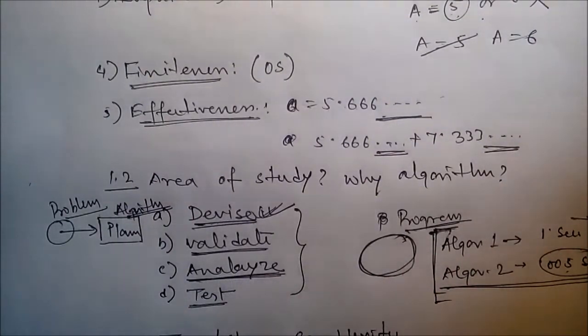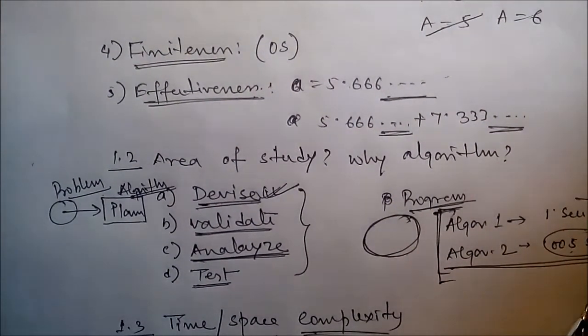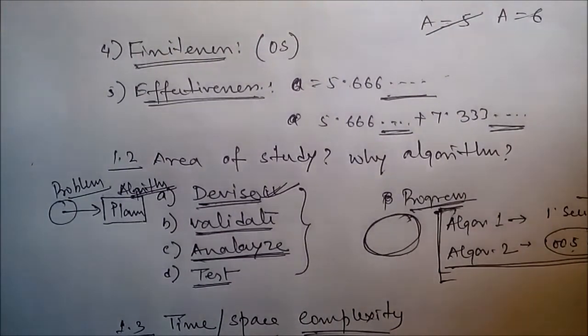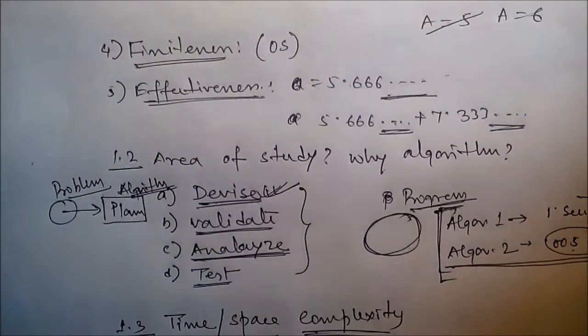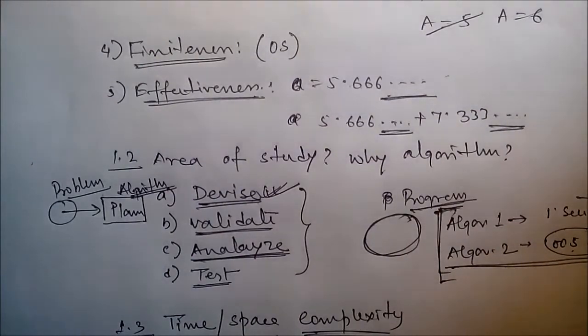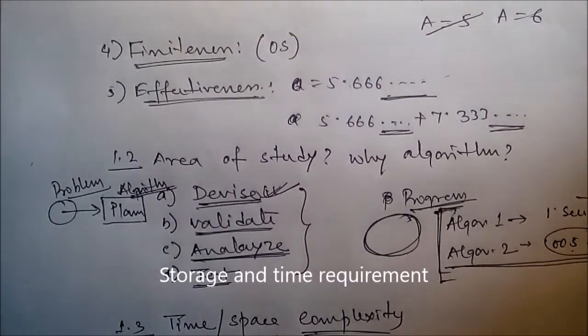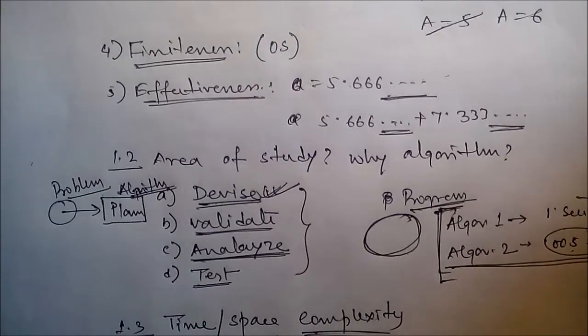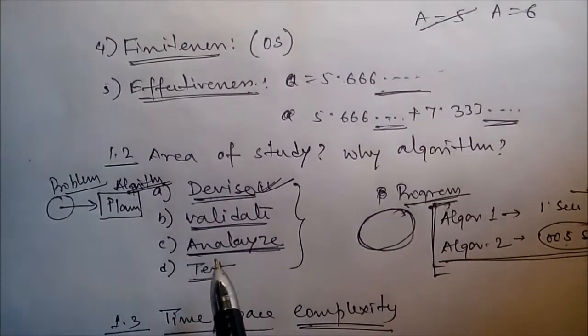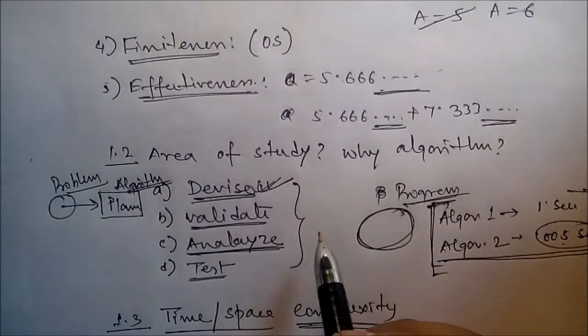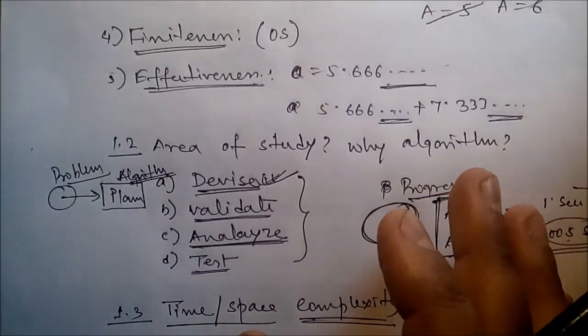Next is analysis. Once we have written an algorithm, we have to check its performance - how much space it needs, how much time it needs to execute and give the output. Analysis of an algorithm or performance analysis refers to determining how much computing time and storage an algorithm requires. It allows you to make quantitative judgments about the value of one algorithm over another by comparing time complexity and space complexity.